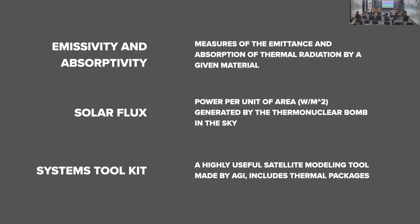Key terms to know when talking about thermal energy: emissivity and absorptivity — the emittance and absorption of thermal radiation of a given material. Solar flux is the power per unit area generated by the sun. Systems Toolkit is a modeling program available free to students that lets you model orbits, solar flux, and thermal behavior — useful if you're building a satellite that will live in space for a long time.